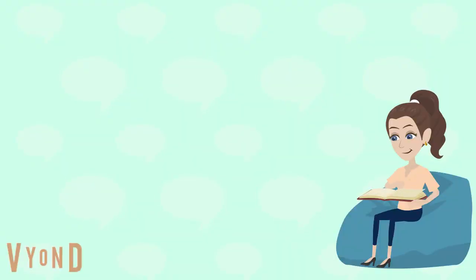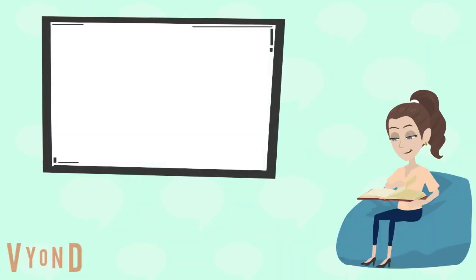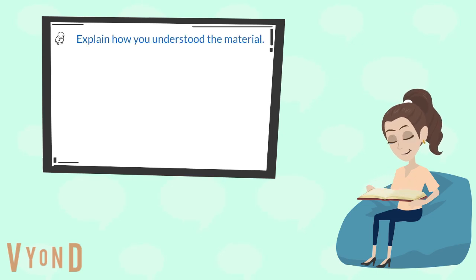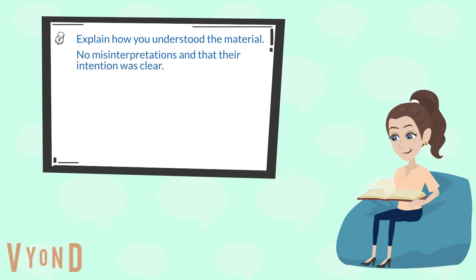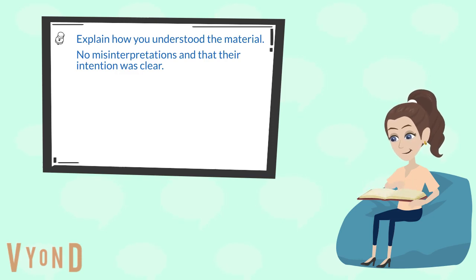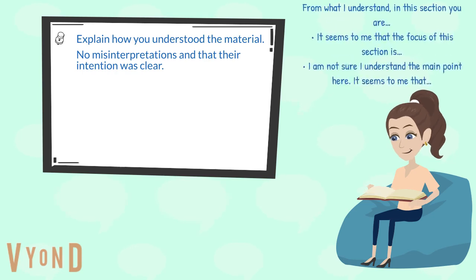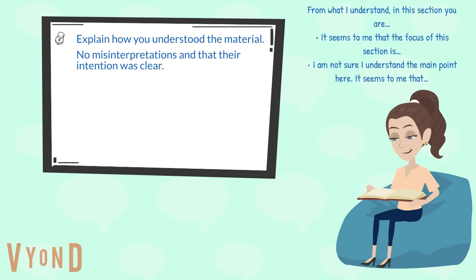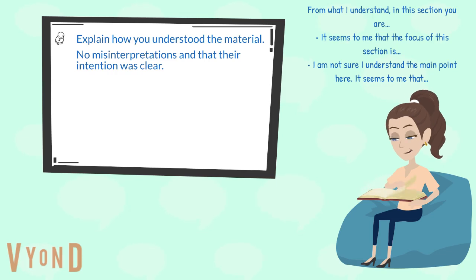When providing criticism, it is about explaining to the author how you as the reader understood the paper. First, explain how you understood the material. This way, the author can make sure there were no misinterpretations and that their intention was clear. It also helps the author understand where your feedback is directed. Try using phrases like: 'From what I understand, in this section you are...' or 'It seems to me that the focus of this section is...' or 'I'm not sure I understand the main point — it seems to me...' and then provide your reasoning.